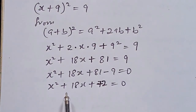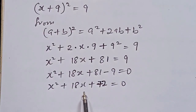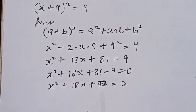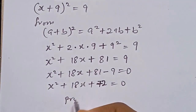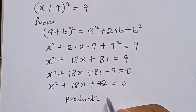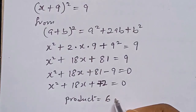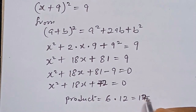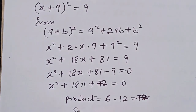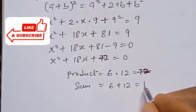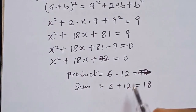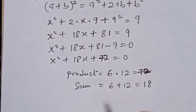So here we have a quadratic equation. We now solve for x using the factorization method. We look for the product of 72 and the sum of 18. The product is given by 6 multiplied by 12, which equals 72. Then the sum is given by 6 plus 12, which equals 18. So these are the two numbers that will make the factorization process easier for us.